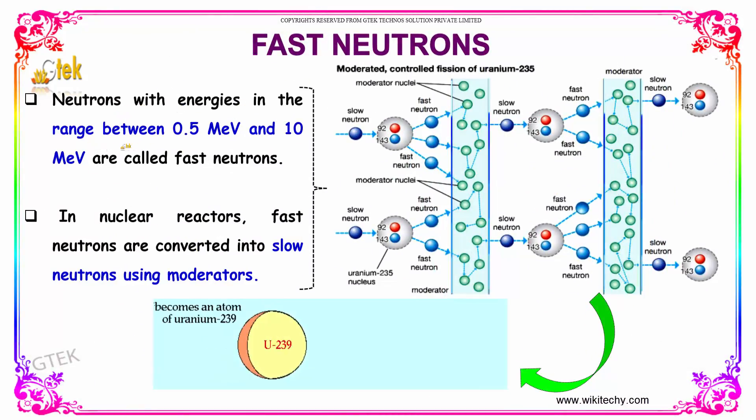Neutrons with energy in the range between 0.5 MeV and 10 MeV are called fast neutrons.